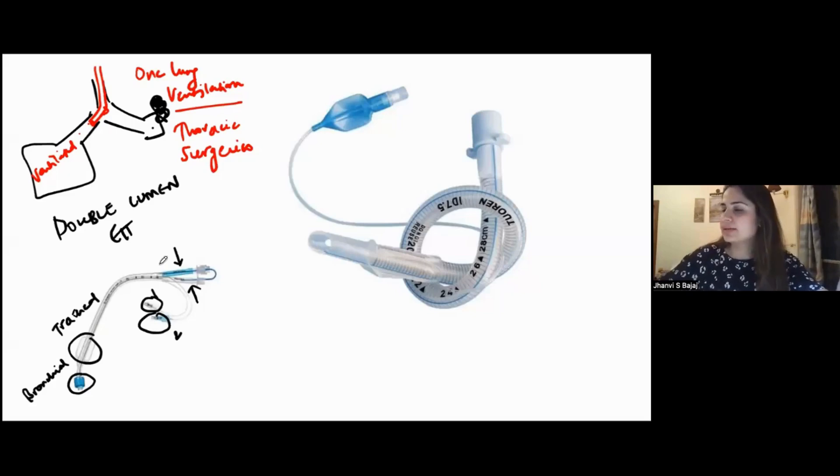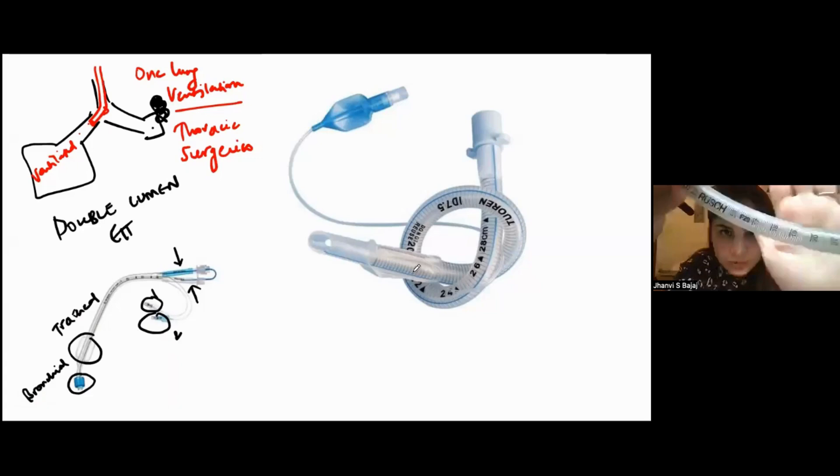Now, the next tube that you can see over here. Look at this tube. You can see there are metallic rings inside this tube. Can you see it? Small, narrow metallic rings.